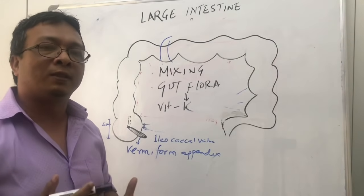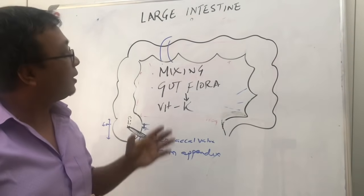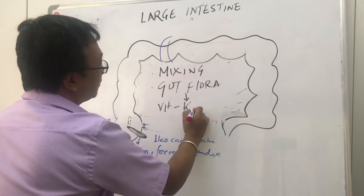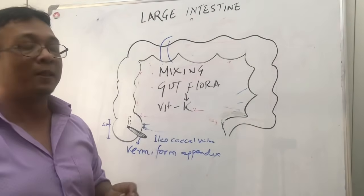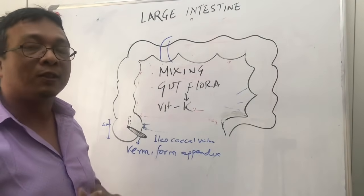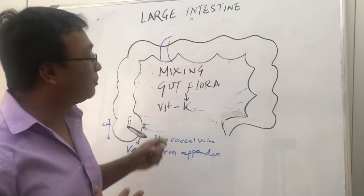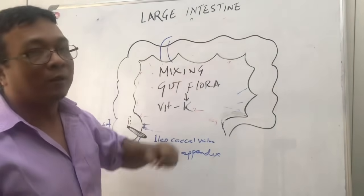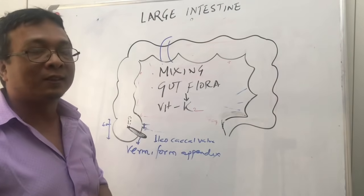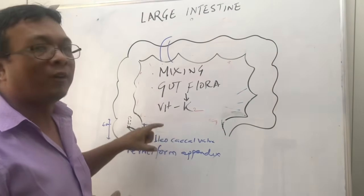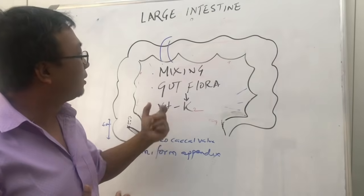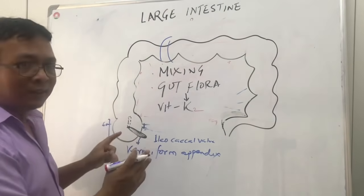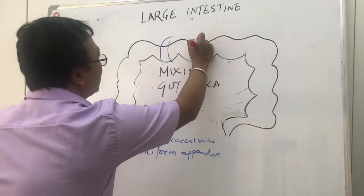The vitamin K we take in our diet is K1, but the gut flora bacteria here can produce a large amount of vitamin K2, which is a blood clotting agent. This is an important benefit of having a lot of bacteria in the large intestine. The gut flora also produces a lot of B complex vitamins.